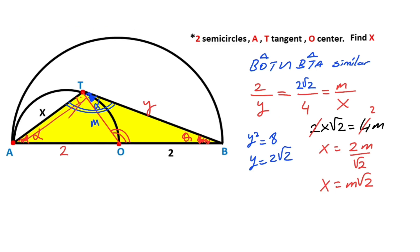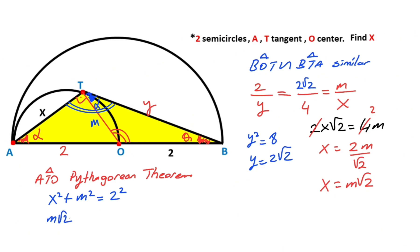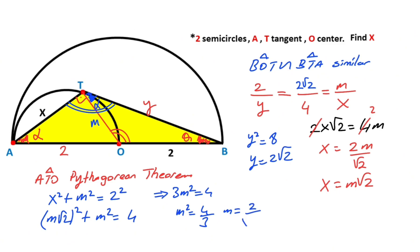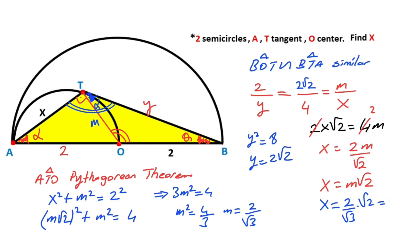Then, if you focus on triangle ATO — this triangle is a right triangle — so we can apply the Pythagorean theorem. So x squared plus m squared equals 2 squared, i.e., 4. We know x equals m√2, so (m√2)² plus m² equals 4, giving 3m² equals 4, meaning m² equals 4/3, so m equals 2/√3. Therefore x equals (2/√3) times √2, which means x equals 2√6/3.